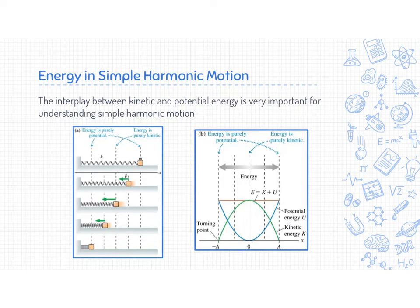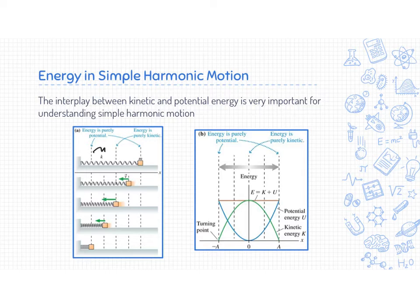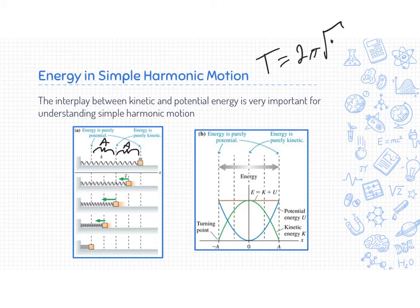The first thing we want to tackle — we actually tackled in the first lab a little bit — is the concept of energy in simple harmonic motion. On the left side here I have a horizontal oscillator. We've talked about how it oscillates back and forth between these two points. The point from the midpoint to the furthest away point is our amplitude, and we have that on both sides. The time it takes to go back and forth is the period, and that's going to be two pi times the square root of m over k.